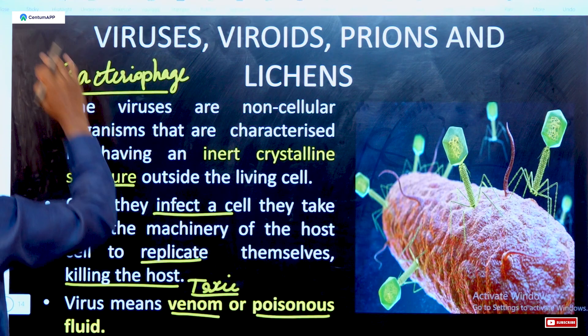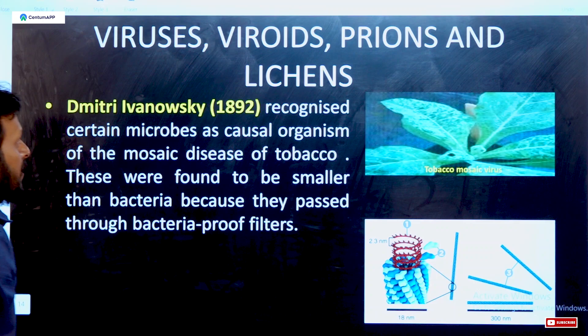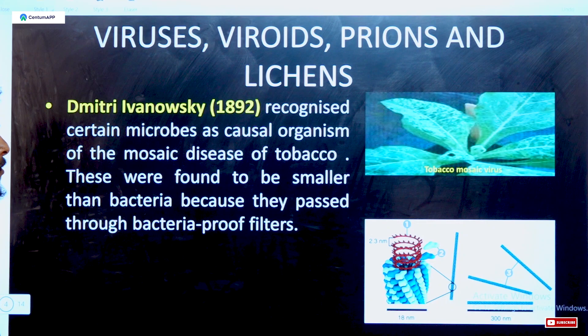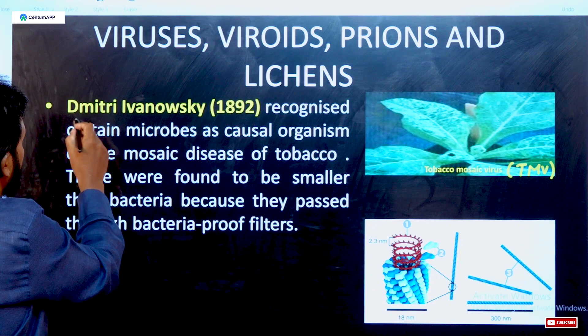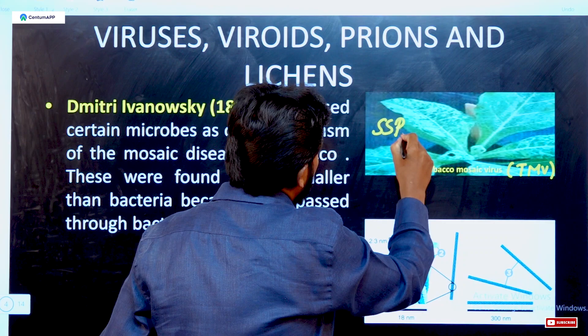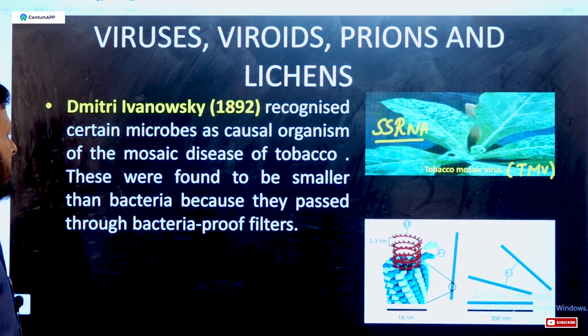The first virus identified was Tobacco Mosaic Virus, called TMV. This virus mostly occurs as a single-stranded RNA. Dmitri Ivanovski first recognized certain microbes affecting particular organisms, specifically in tobacco plants — which turned out to be Tobacco Mosaic Virus. Viruses are very smaller in size compared to bacteria.